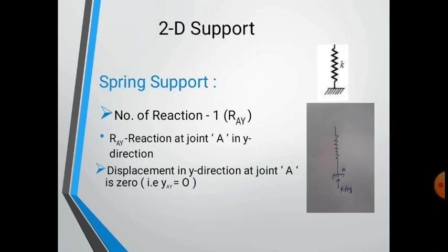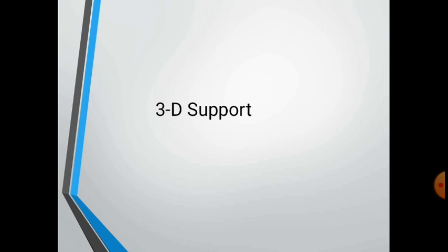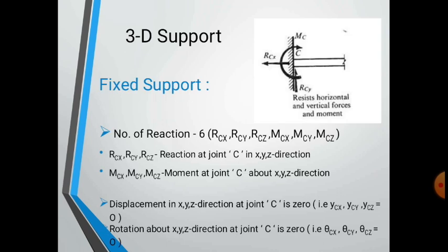We also have the spring support. It produces only one reaction because it can resist only in one direction, denoted as RA y — the reaction at joint A in the y-direction. The displacement in the y-direction at joint A is zero. That concludes the 2D support systems.